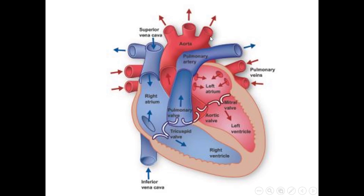This blood is distributed through different arteries. The valve between the left ventricle and the aorta is called the aortic valve, because it passes blood from the left ventricle to the aorta. From the aorta, the oxygenated blood is supplied all over the body.